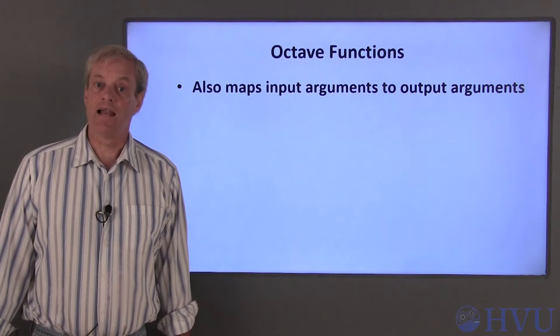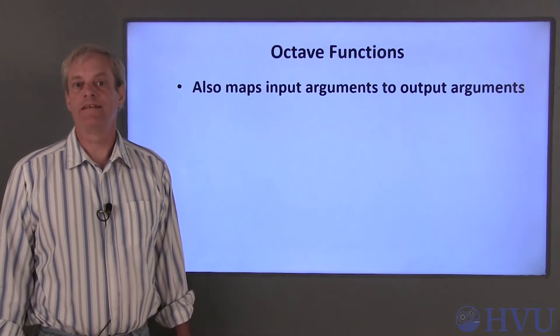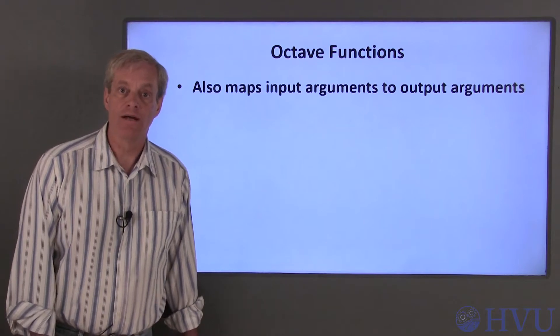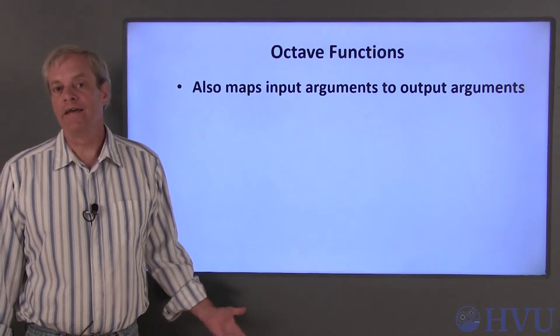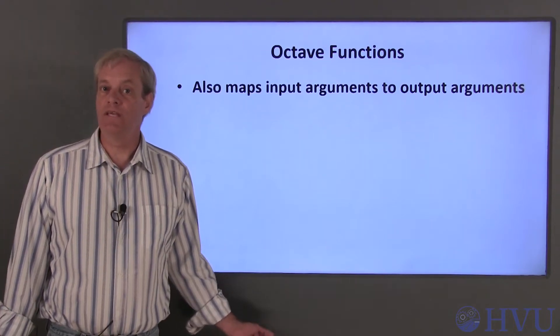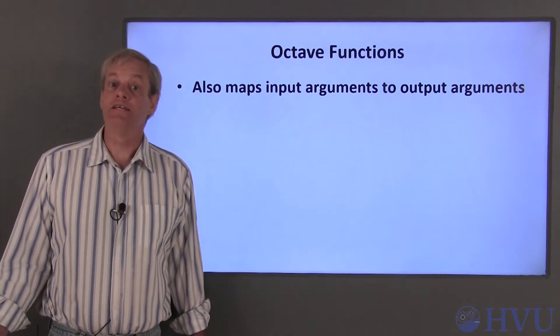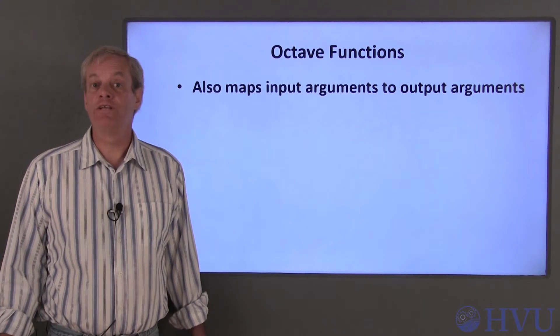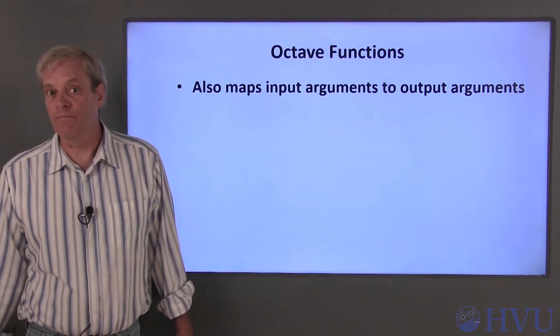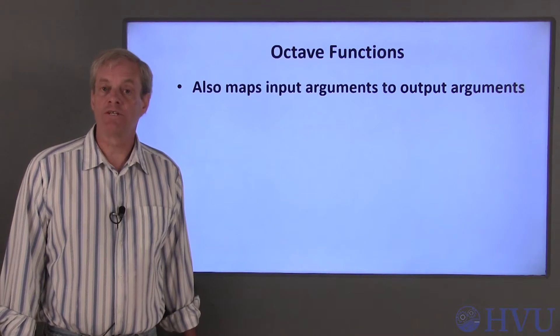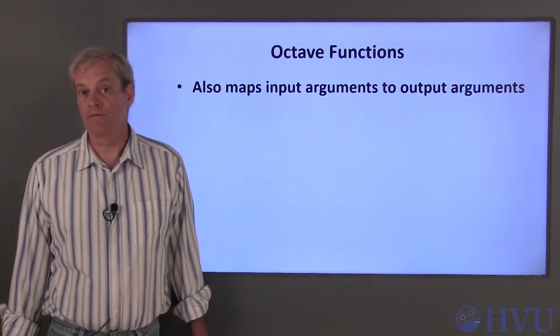Octave functions are analogous to mathematical functions in that they transform or map an input argument into an output argument. However, they don't provide the symbolic relationship between the input and the output that the mathematical function does. They take numbers as input arguments and return numbers as output arguments. The output numbers correspond to the values of the function for the corresponding input argument values.